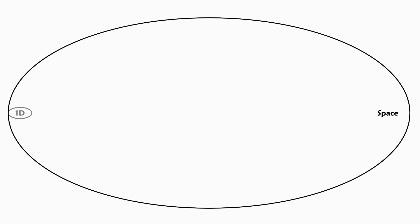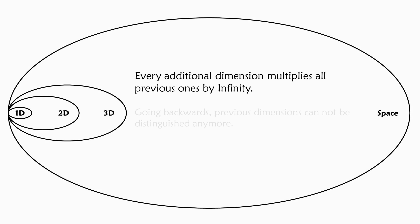So the first, second, third. Every additional dimension multiplies all previous ones by infinity. And as a side notice, previous dimensions cannot be distinguished anymore. That means, looking from three dimensions, it is not possible to say which dimension was the third and so on.